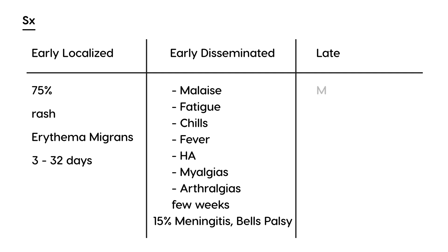Then we have the late stage, which can happen months to years later if it's not treated. The late stage symptomatology involves severe arthritis, commonly affecting the knees.